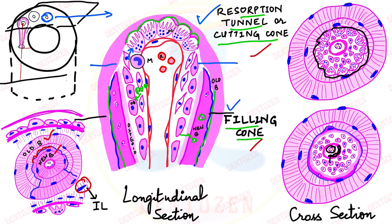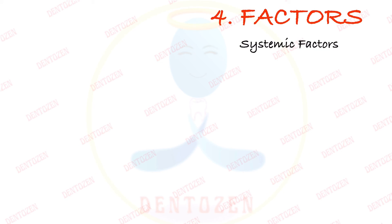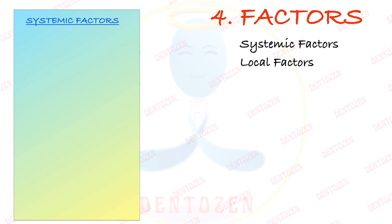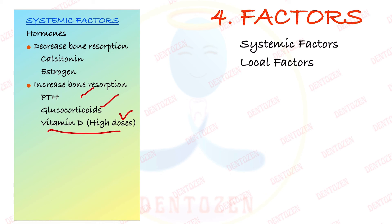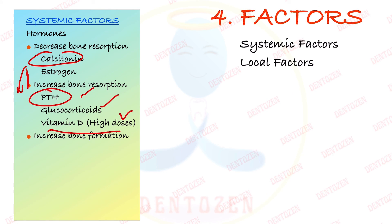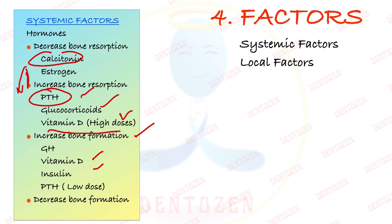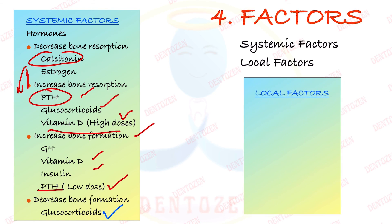Regulatory factors can be systemic or local. Systemic factors are mainly hormones. Those that decrease bone resorption include calcitonin and estrogen. Those that increase bone resorption include parathyroid hormone (PTH), glucocorticoids, and high doses of vitamin D — PTH and calcitonin are antagonists. Hormones that increase bone formation include growth hormone, vitamin D, insulin, and low-dose PTH; glucocorticoids decrease bone formation. Local factors include growth factors and cytokines such as interleukins and prostaglandin E2.